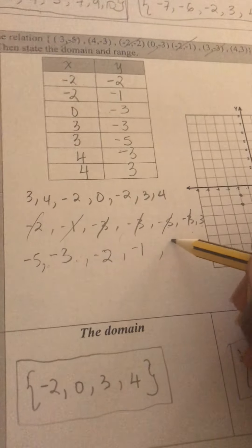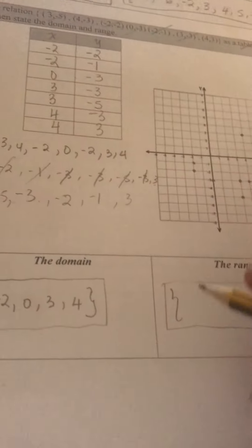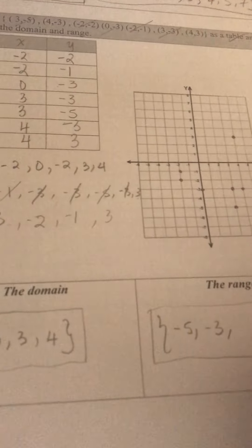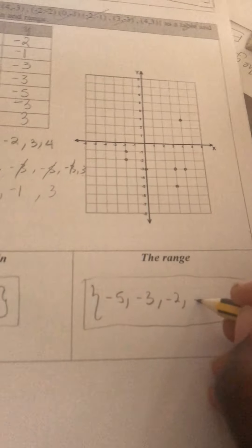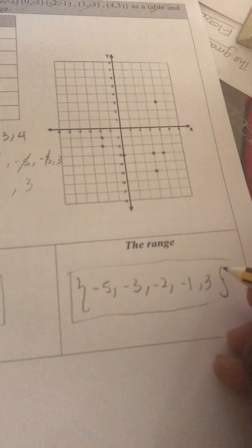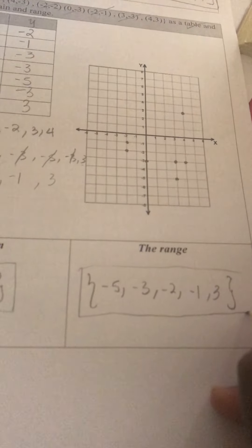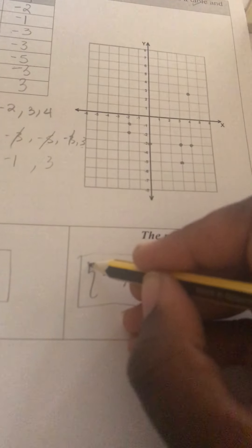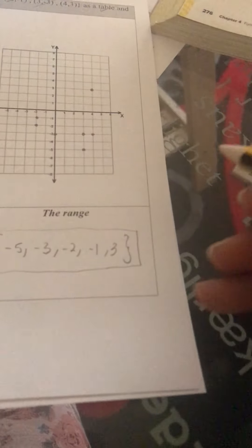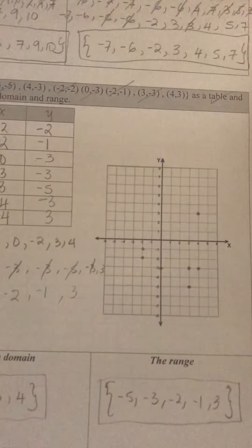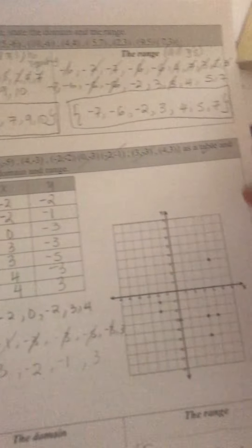So the range is: negative 5, comma, negative 3, comma, negative 2, comma, negative 1, and then 3. Then you close your braces — open braces, close your braces. And you have answered this question completely: you did your table, your graph, your domain, and your range.